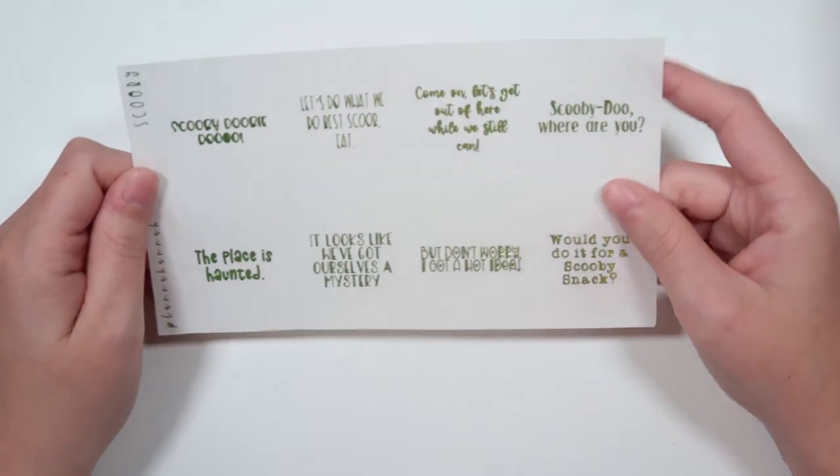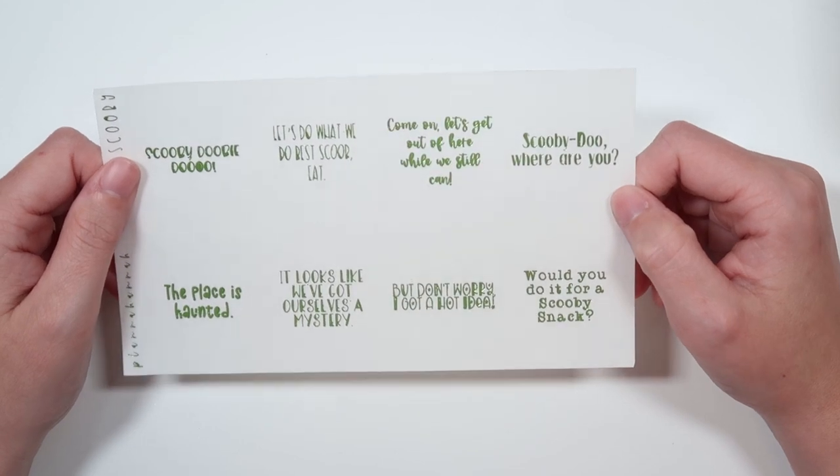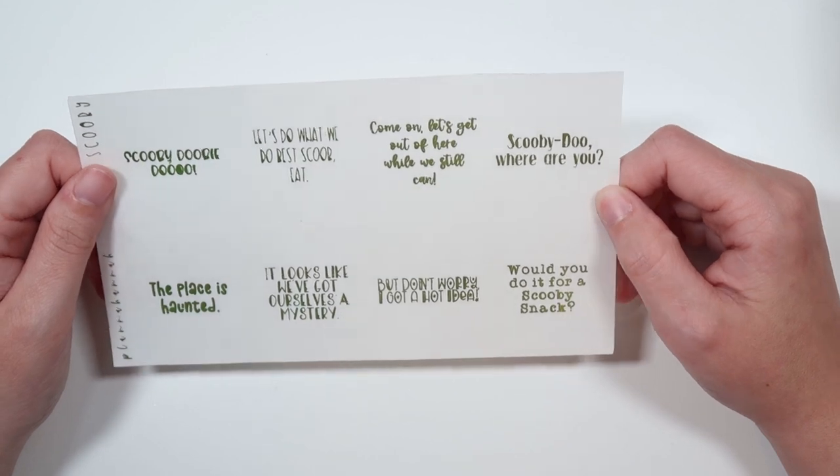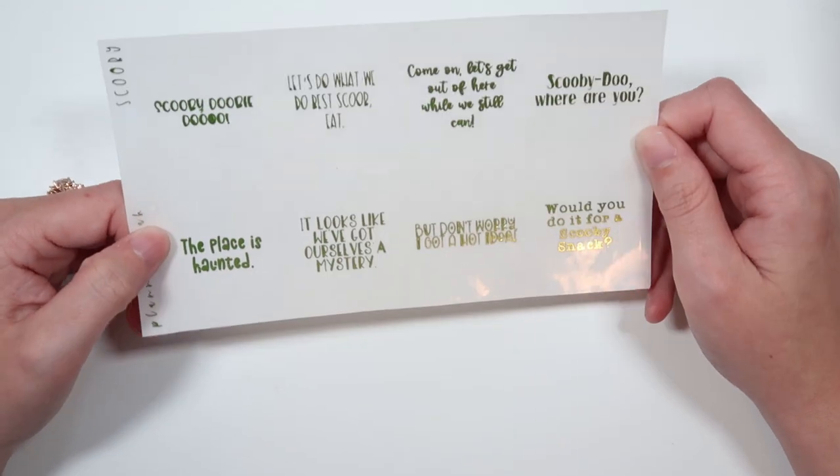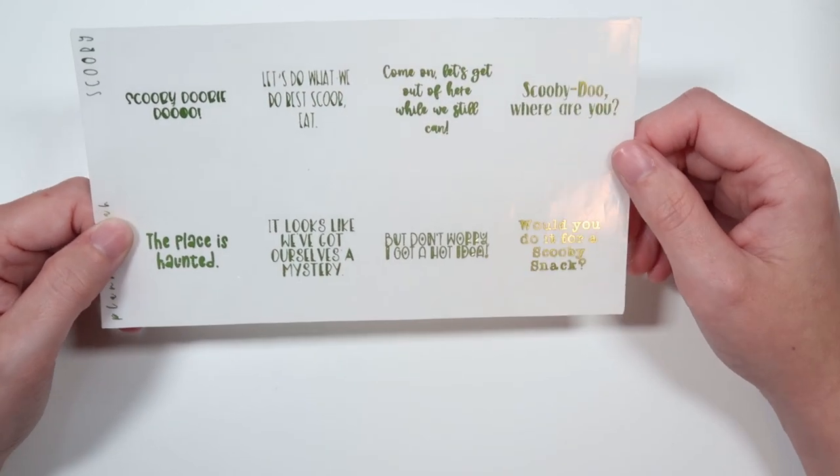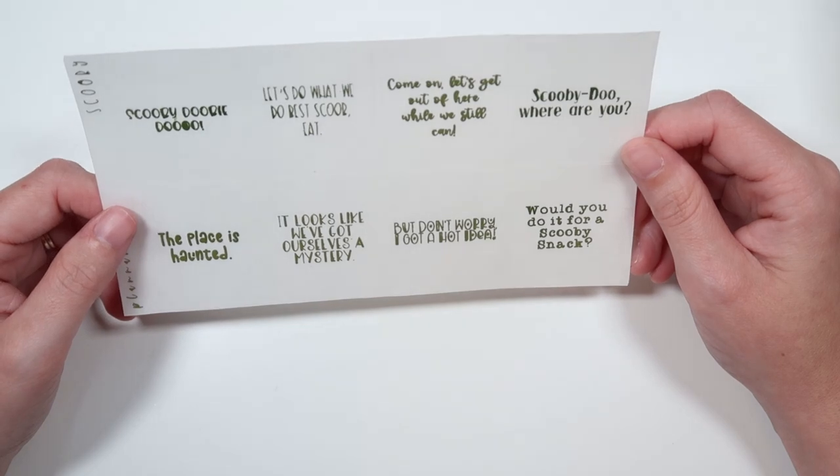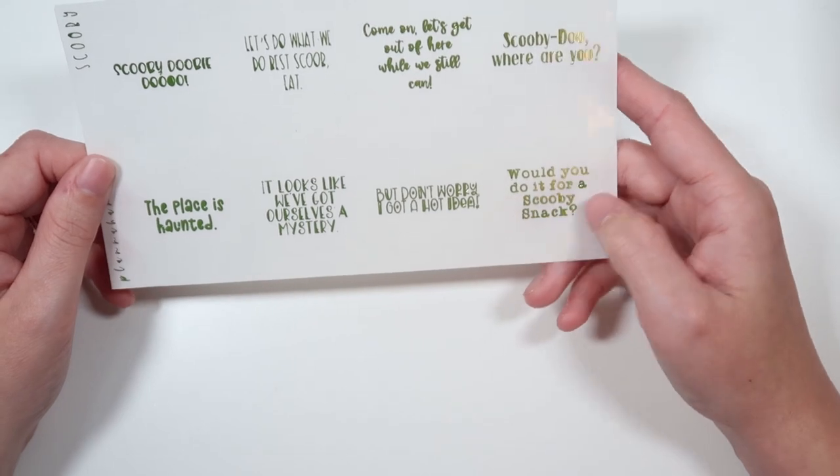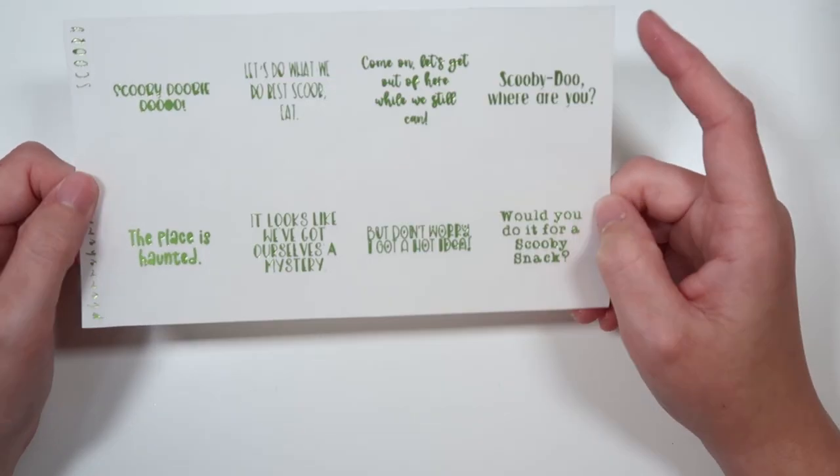But we do have three new quote sheets coming to the shop. The first one is Scooby-Doo. Scooby-Doo because this was requested by multiple people. And I'm showing it to you in lime. The quotes are Scooby-Dooby-Doo, let's do what we do best Scoob eat, come on let's get out of here while we still can, Scooby-Doo where are you, this place is haunted, it looks like we've got ourselves a mystery, but don't worry I got a hot idea, and would you do it for a Scooby snack. My bad. I was thinking of a Klondike bar. So those are the Scooby-Doo quotes.